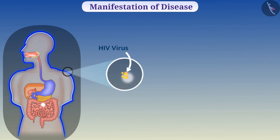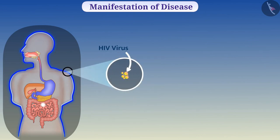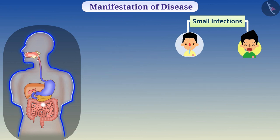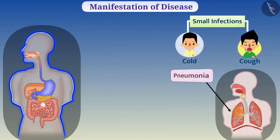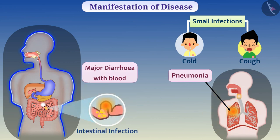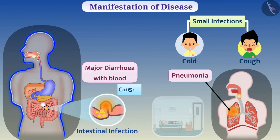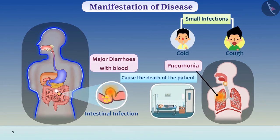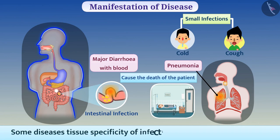HIV virus lives in the cells of the immune system and destroys them. Because of this, we cannot fight small infections. In this situation, common cold and cough can cause pneumonia, and intestinal infection can cause major diarrhea with blood. These other infections cause the death of the patient. In this way, in some diseases, tissue specificity of infection shows very general effects.